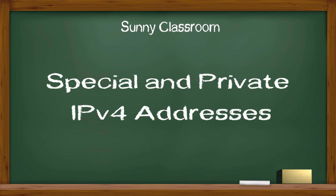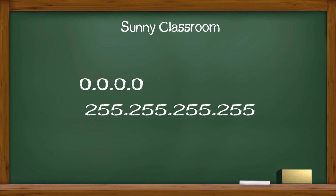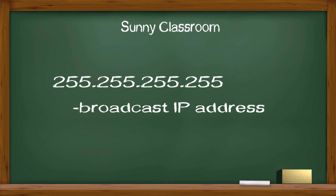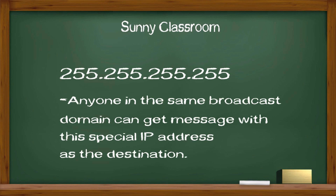Let me start with two special IP addresses. The very first one, 0.0.0.0, and the very last one, 255.255.255.255. The second IP address with four 255s is a broadcast IP address. Anyone in the same broadcast domain can get a message with this special IP address as the destination IP address.